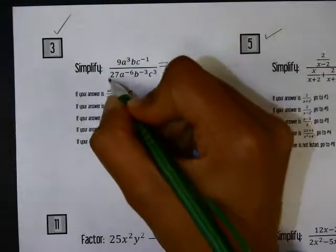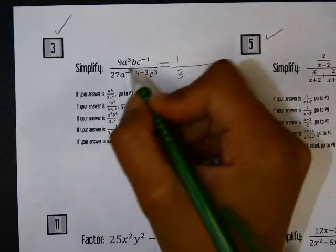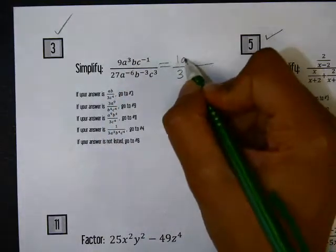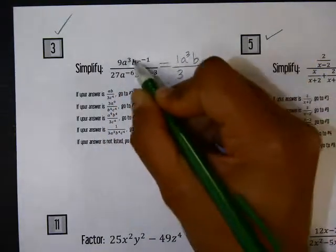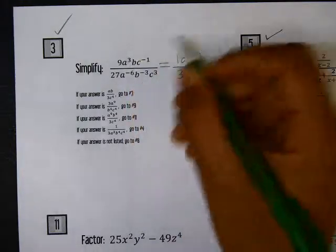So the 9 and the 27 reduce to 1 over 3. A cubed and B, those are both positive exponents, so those are going to stay.